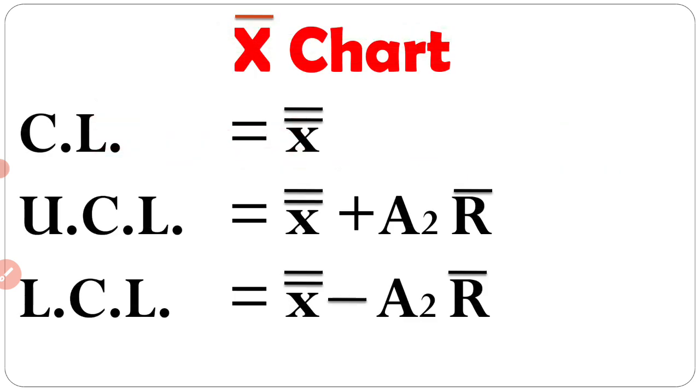Now note down the formula for X bar chart. CL is equal to double X bar. UCL is equal to double X bar plus A2 R bar. A2 was given in the question. LCL is equal to double X bar minus A2 R bar. So this is very three important formula. CL, UCL and LCL. CL means control limit, otherwise central line.